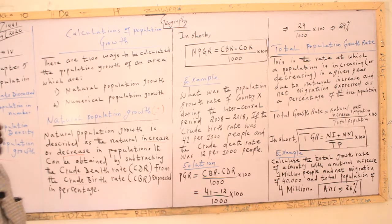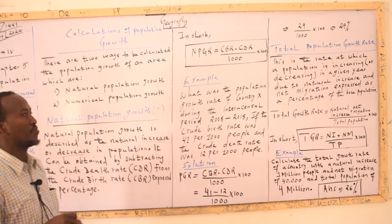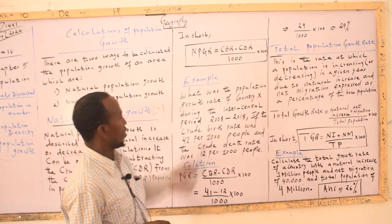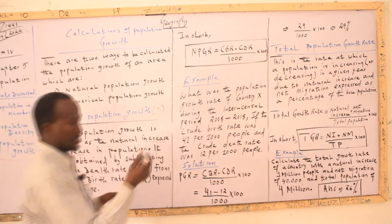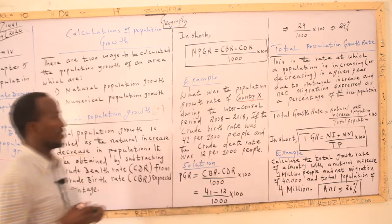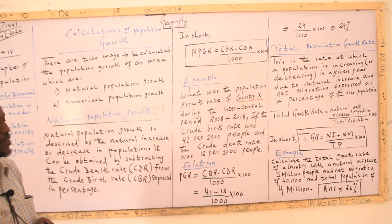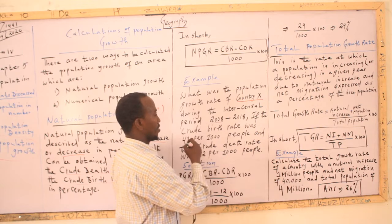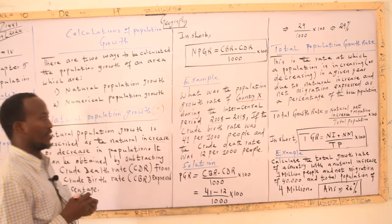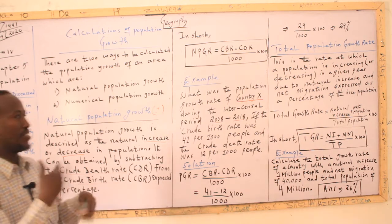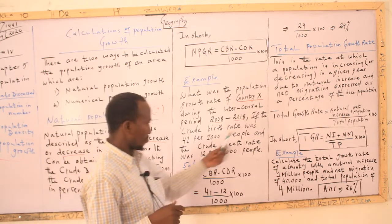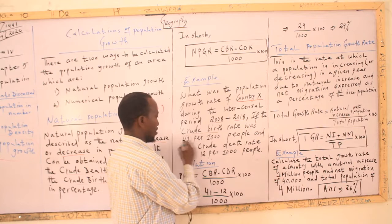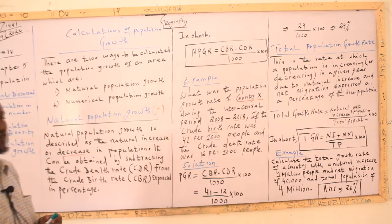The population growth rate is not the same across all countries — they are different. They should not be treated as the same. In this example, we are given a birth rate of 41 per 1,000 people, and we are looking for the natural population growth rate.